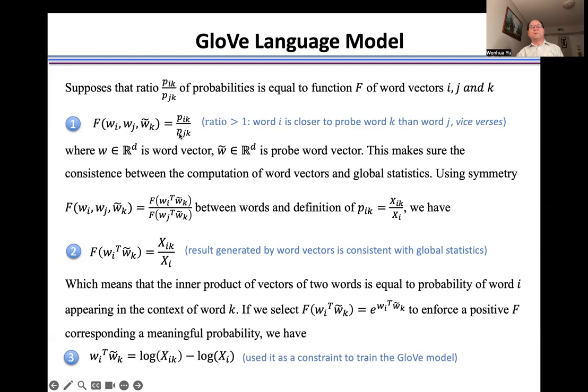That means there's a ratio larger than one. Ratio larger than one means word i is closer to word k than j. That means in the feature space and the global statistics are consistent.